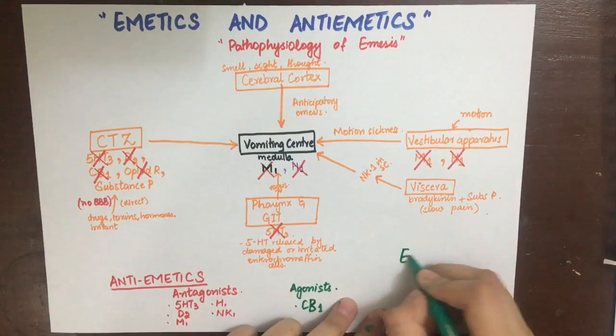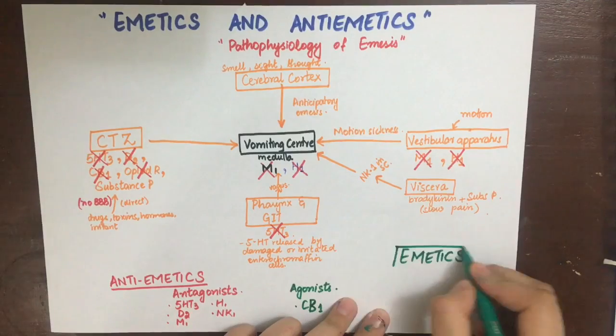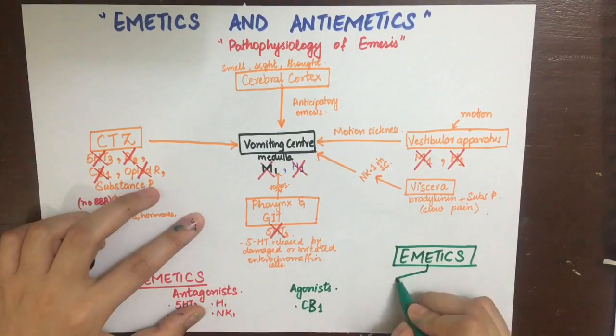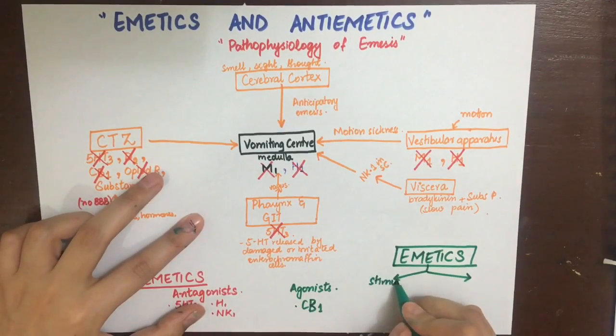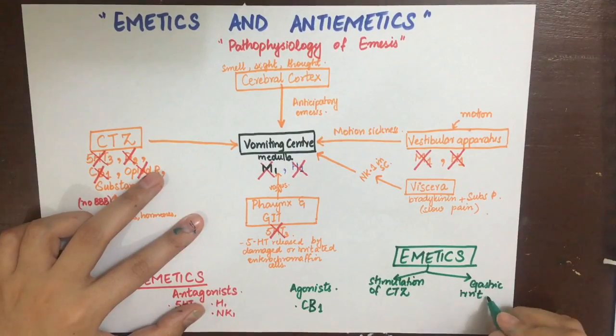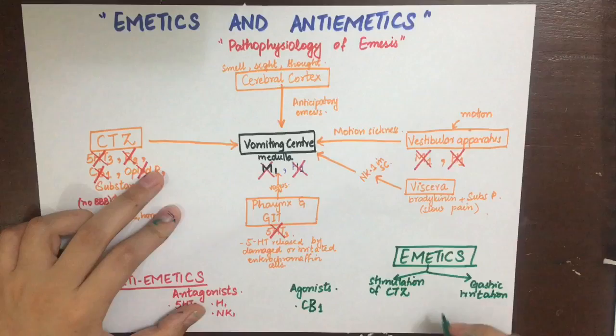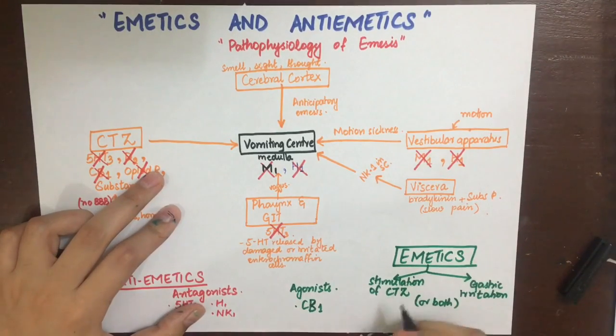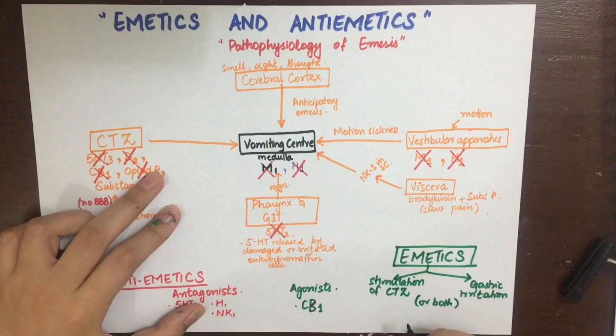Another way to manipulate this pathway is to use emetics. Why would we use emetics? Maybe in poisoning, in cases where there is indigestion. We can cause emesis by stimulating the CTZ, or we can irritate the gastric mucosa, or we can do both.